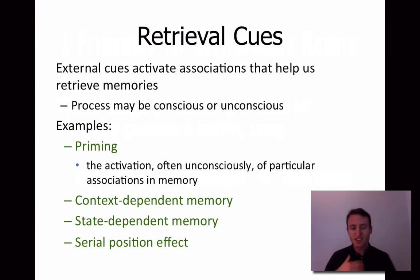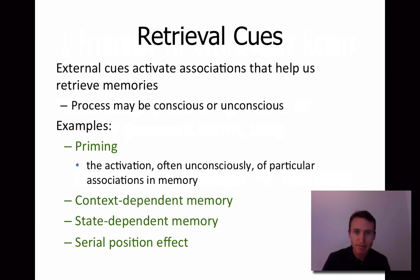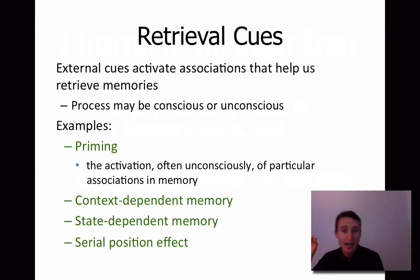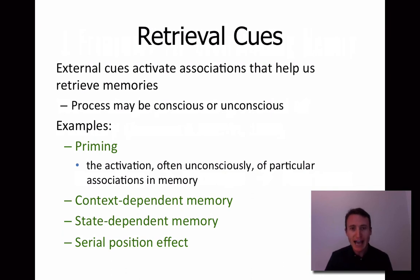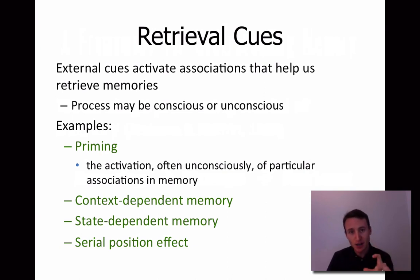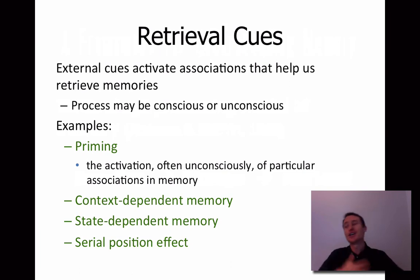State-dependent memory — state refers to things like mood or behavioral state. If you learn something when you are in a sad or depressed state of mind, you're activating different neural networks compared to when you're happy. Arguably, you'd be better able to retrieve that information if you are again in that sad and depressed state of mind. To test this, researchers asked people to memorize a list of words while chewing gum, and found that participants were better at retrieving words if they were again chewing gum. So if you're in the state of chewing gum while learning, you want to be in that state again when trying to retrieve that information.